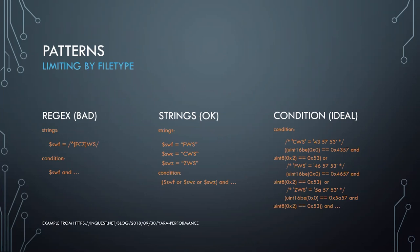One last example for patterns: limiting by file type. For Shockwave Flash — from InQuest's blog — you can use a regex, which is very bad, or you can use strings, which is okay but a little short and adds some overhead. Or you can wait and do it in the condition at the end. The beginning of the file is going to be in RAM or cache every time you look at it in the condition, so it's even faster.